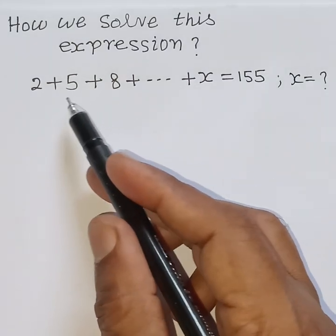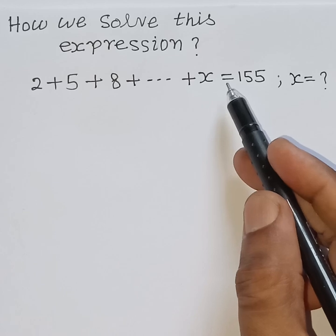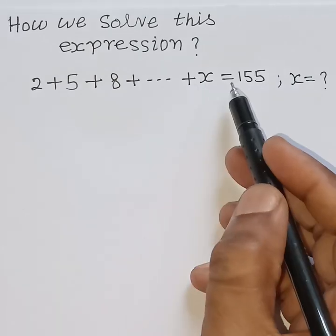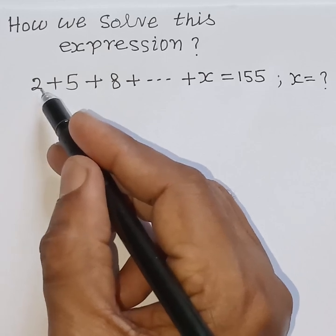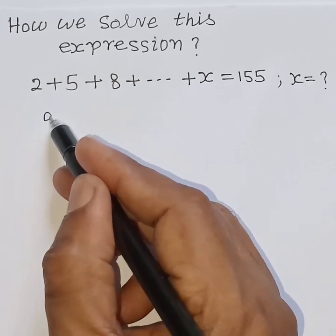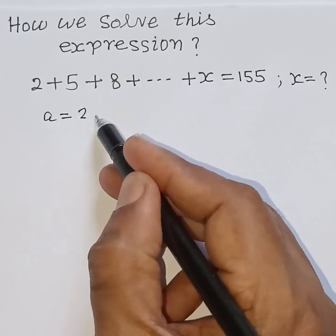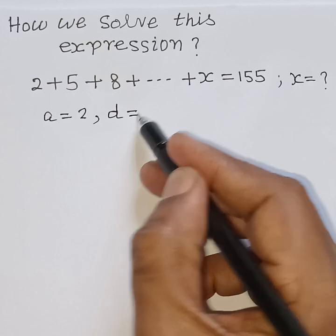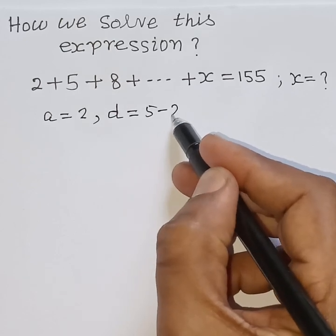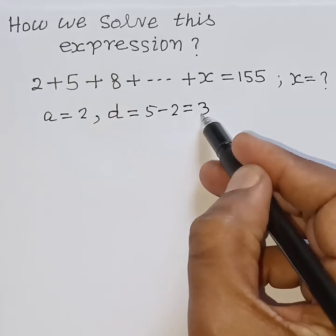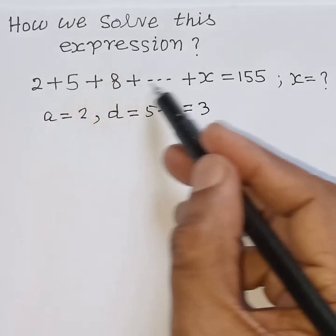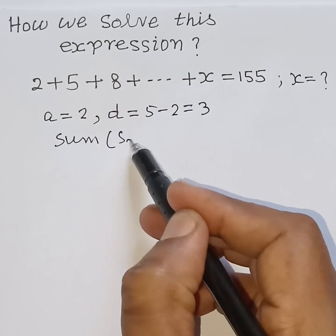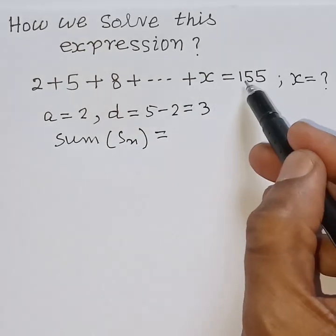The given numbers form an AP, that is arithmetic progression, whose first term a is equal to 2, common difference d is equal to 5 minus 2 is equal to 3, and sum of these terms Sn is equal to 155.